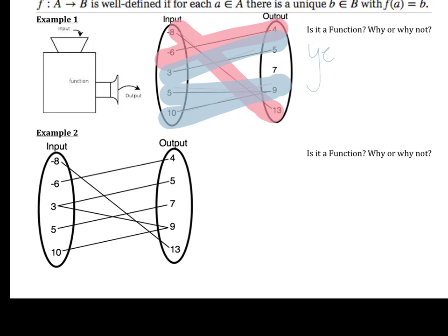Then we ask: is there only one output for every input? Negative eight only goes to thirteen, negative six only goes to four, positive three only goes to five, five only goes to nine. Now, ten going to nine is okay — it doesn't matter that two inputs go to the same place. So yes, every input has one and only one output.